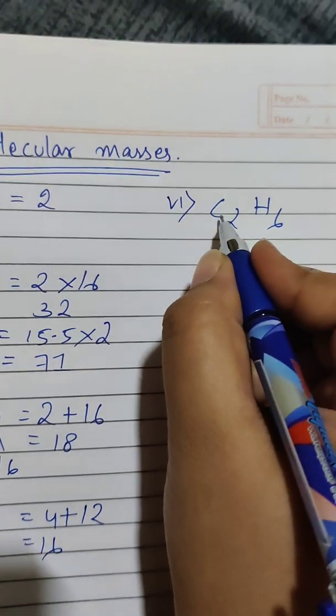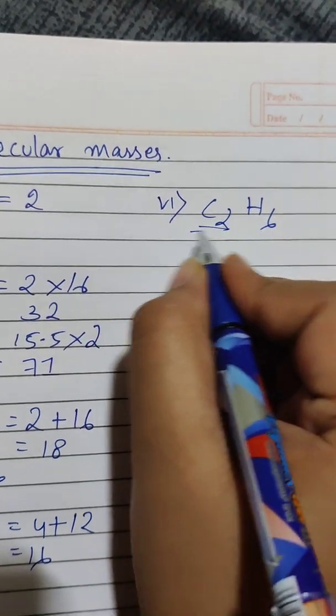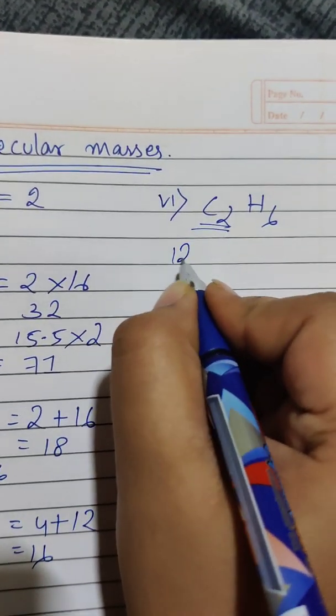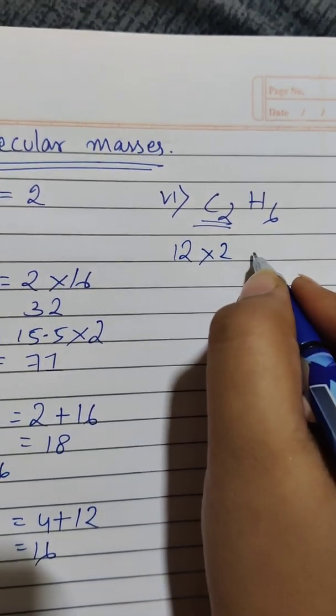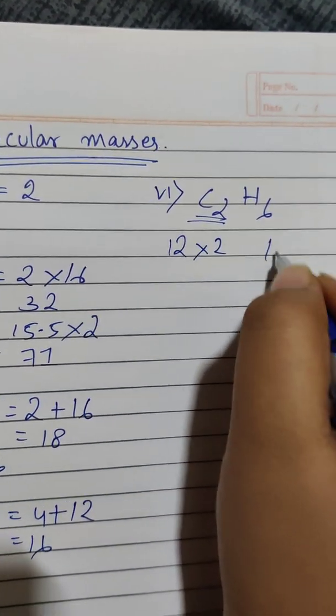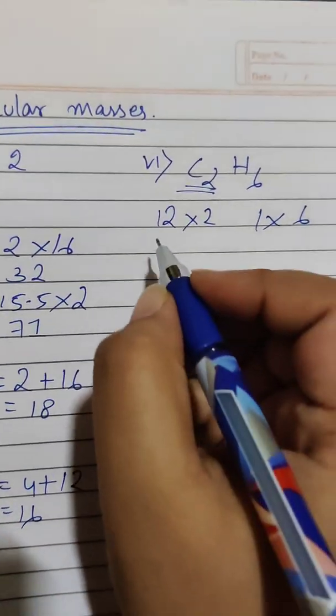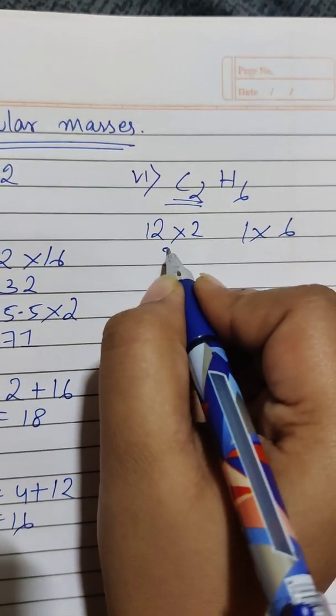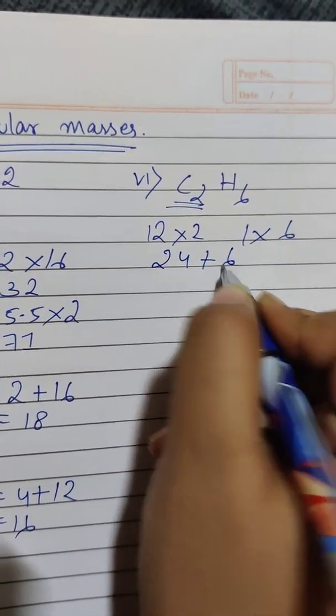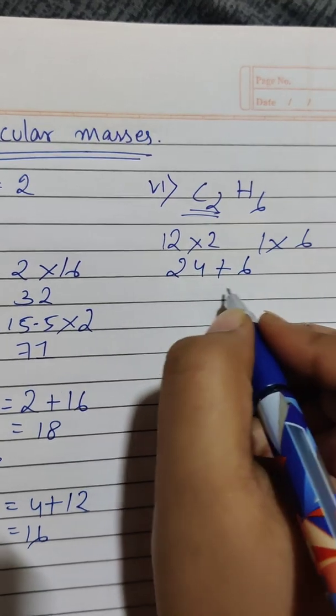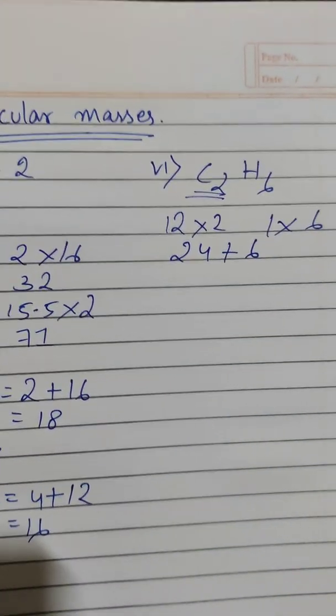C2H6. Two atoms of carbon. Twelve into two. And six hydrogen. Twelve into two, twenty-four. Plus six. Which is thirty.